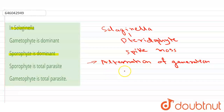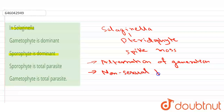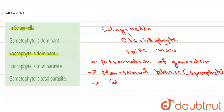There is a non-sexual phase that is called the sporophyte, and a sexual phase that is called the gametophyte.